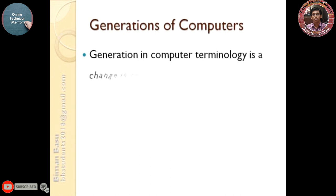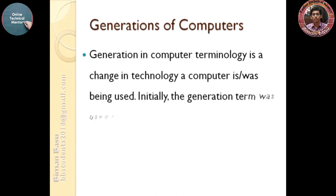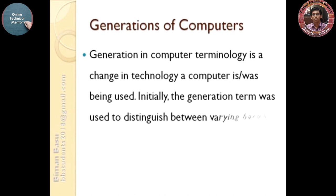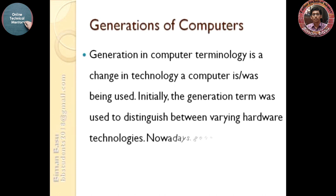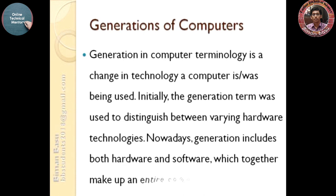Generations in computer terminology is a change in technology. When computers were being used initially, the generation term was used to distinguish between varying hardware technologies. Nowadays, generation includes both hardware and software which together make up an entire computer system. There are five types of generation.